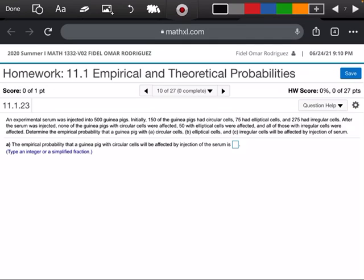So remember, the first thing we're looking at right now is circular cells. So the first thing I need to figure out is how many of those, remember, we have 500 guinea pigs, but some of them have circular cells. So the ones that have circular cells are right here, 150 of them.